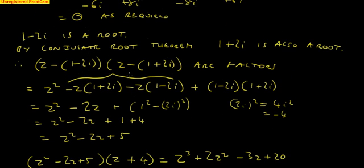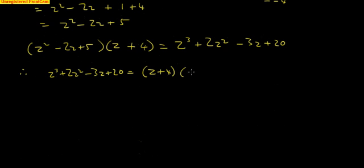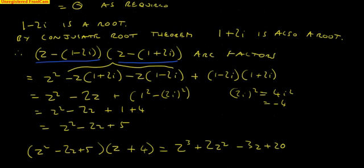Now, here's our other two factors. This is going to be z minus (1 plus 2i), z minus (1 plus 2i). And this one is going to be z minus (1 minus 2i).